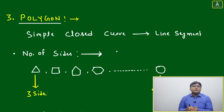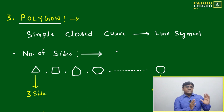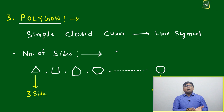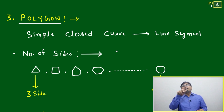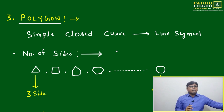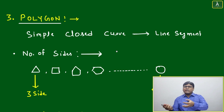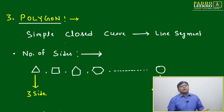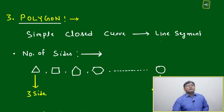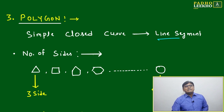What is a polygon? Polygon is very simple. We take a simple curve — meaning a line segment — and we make it closed. Take so many line segments and make them close. That is called a polygon. A simple closed curve made by line segments is called a polygon.